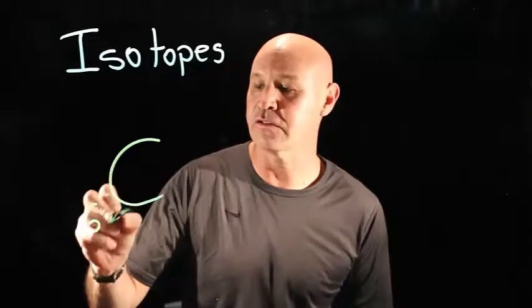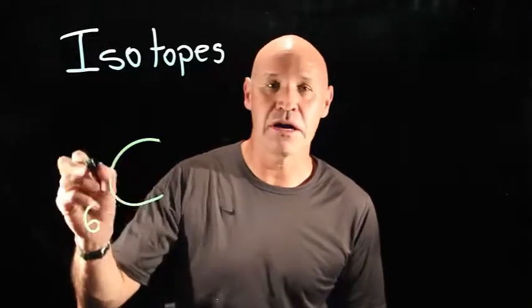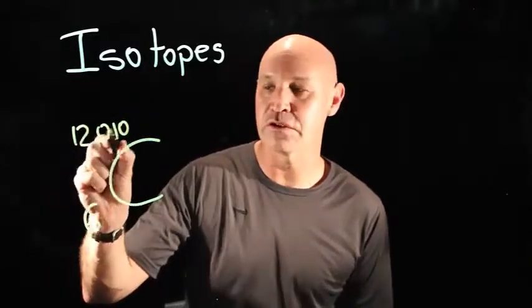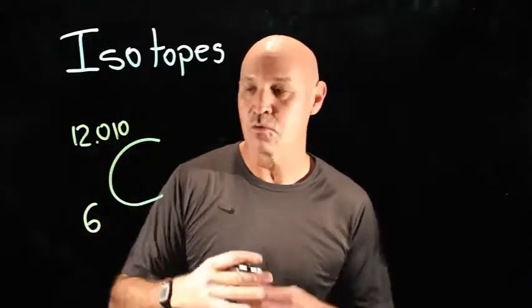For example, carbon obviously has 6 protons—6 is the atomic number—but you might see the mass number written like this: 12.010. Well, what does that mean?